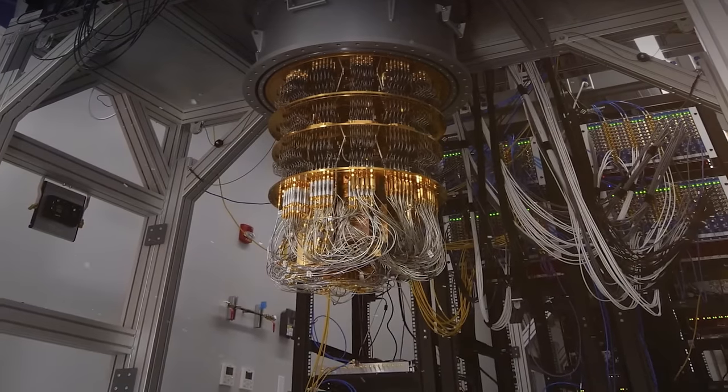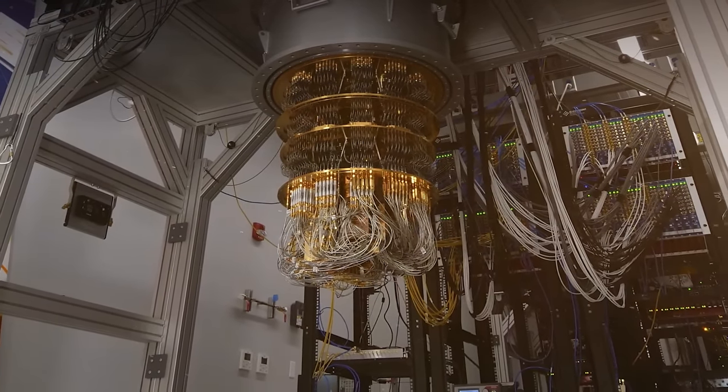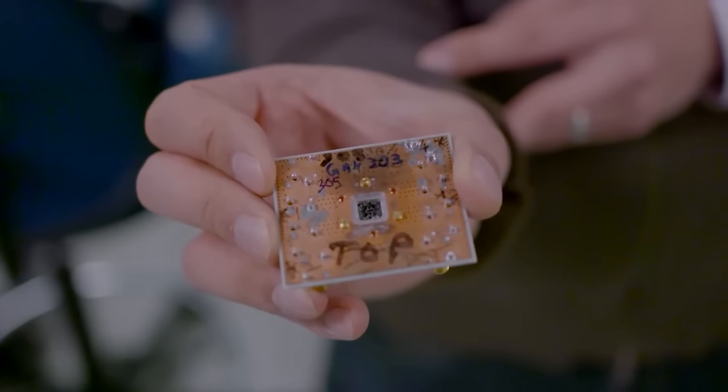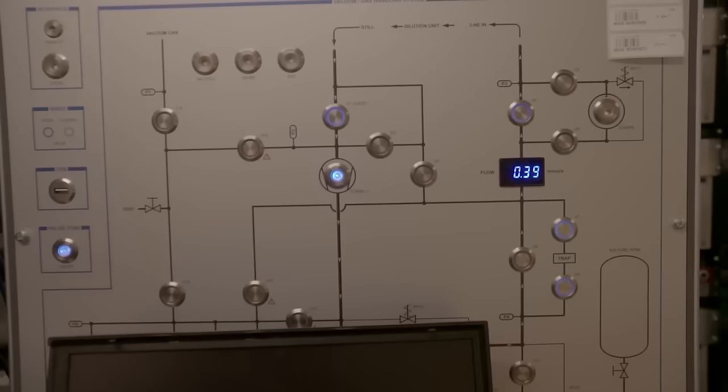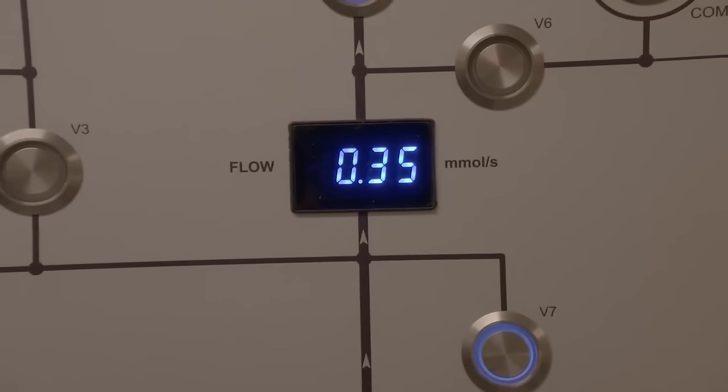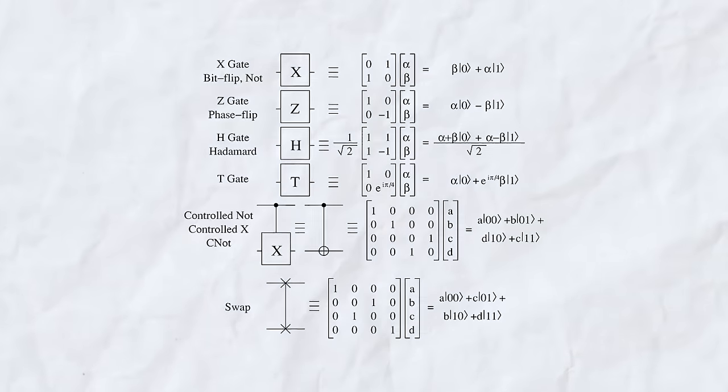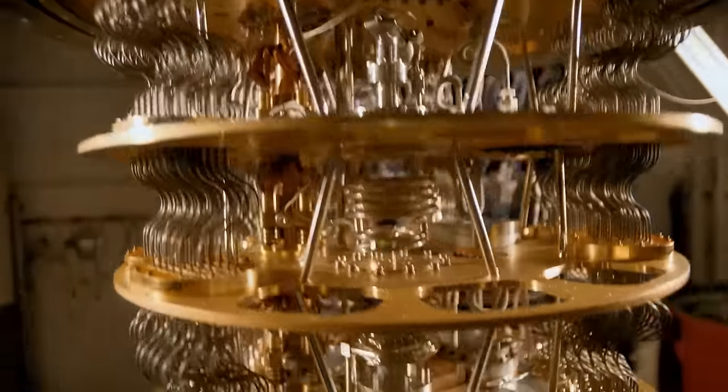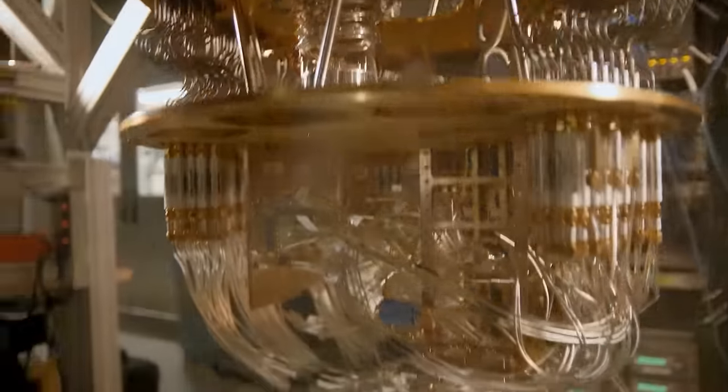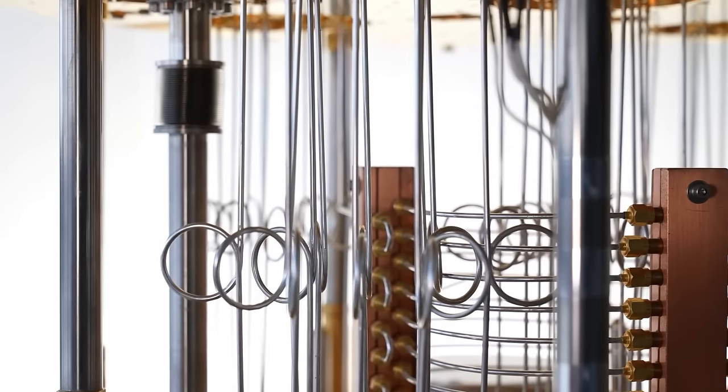However, quantum systems, including Sycamore, are a bit like high-performance athletes. They're incredibly capable, but also prone to errors. What is not a challenge? Everything is a challenge. The error rate of quantum gates, which are operations on qubits, is critically low in Sycamore. This is important because it means Sycamore can handle the intricate dance of quantum computations without stepping on its own toes too often.